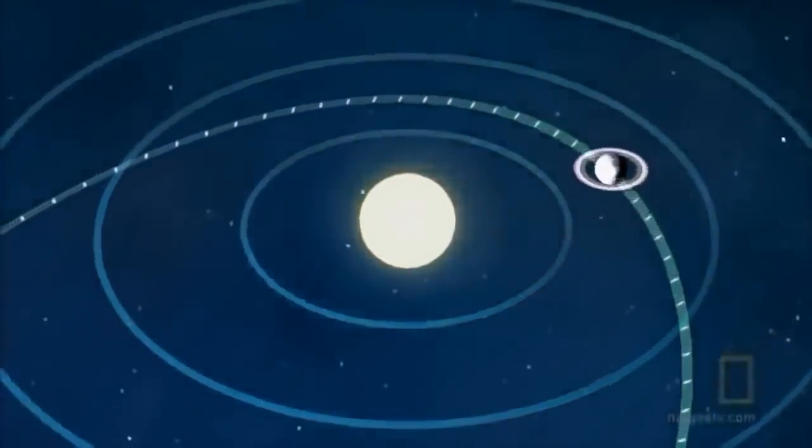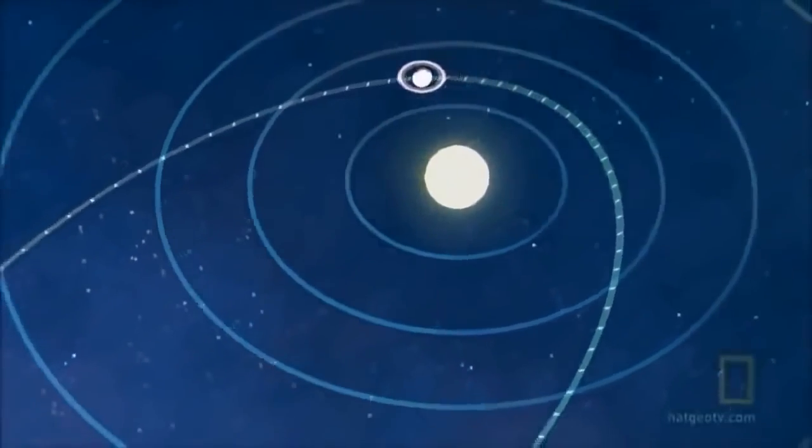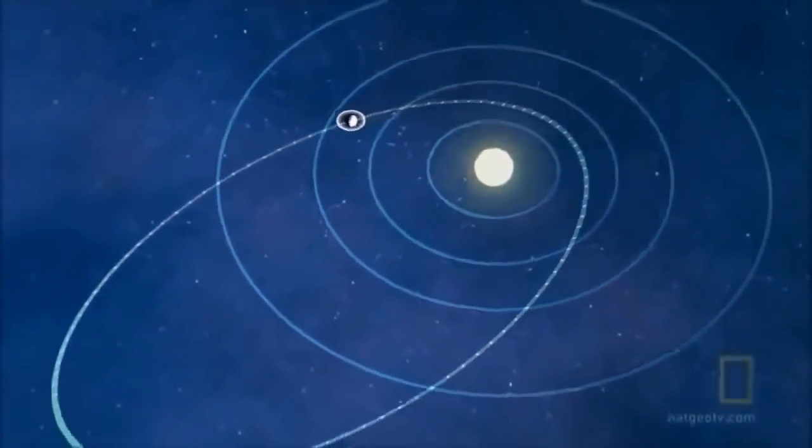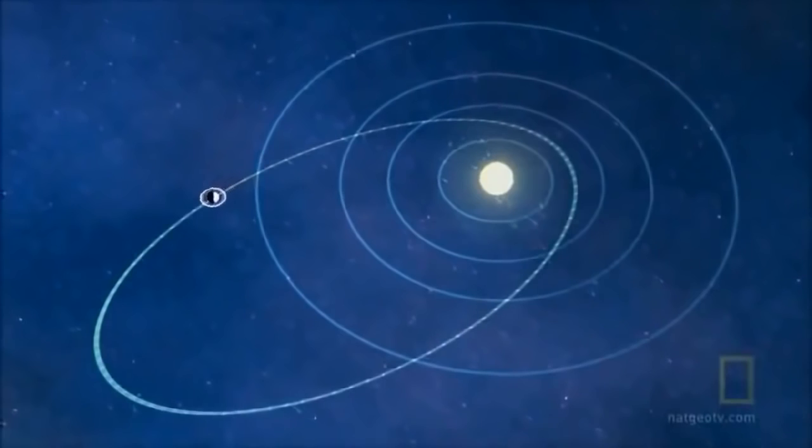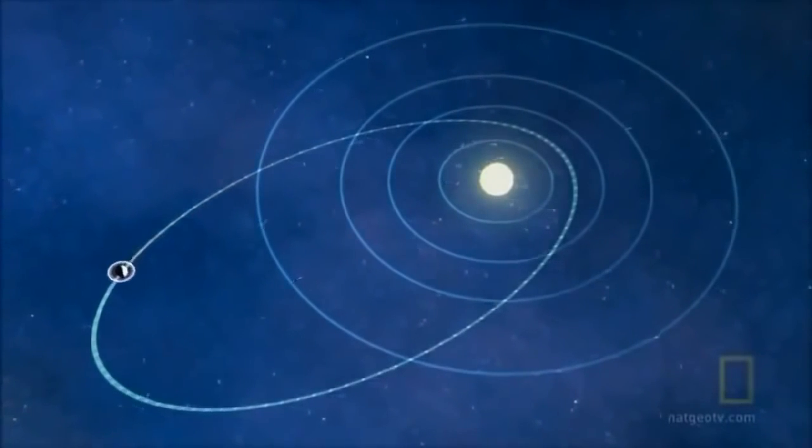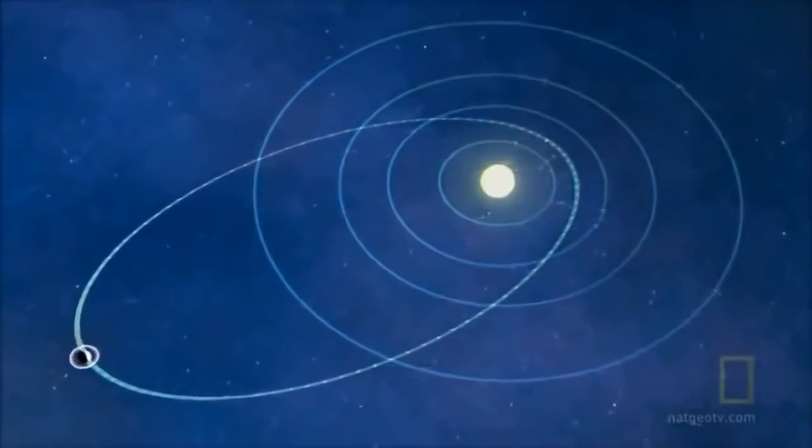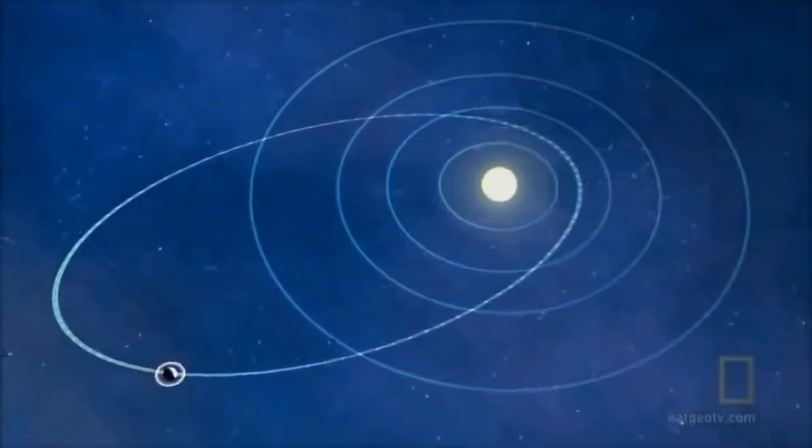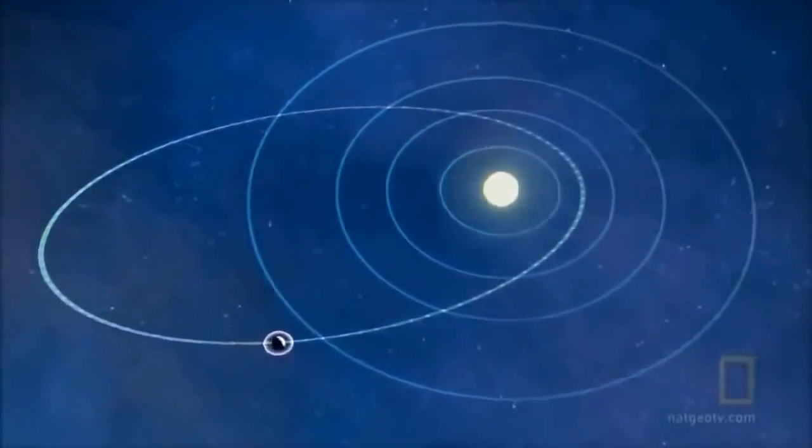For three and a half months during the spring as it races in down, and again in the fall for three and a half months as it hurtles back into the colder reaches of space. Could life survive the conditions outside the Goldilocks zone?